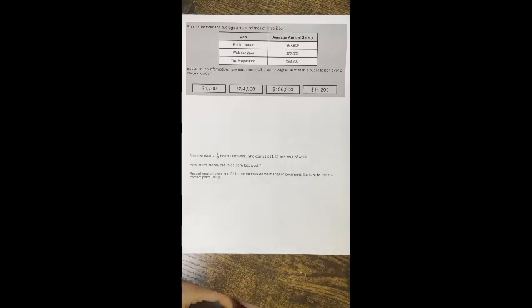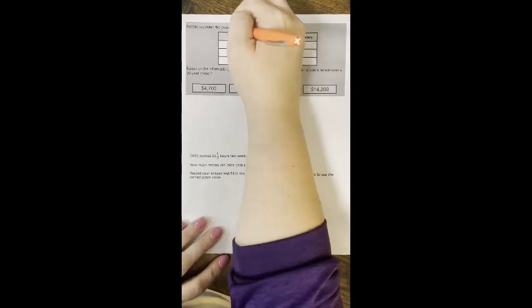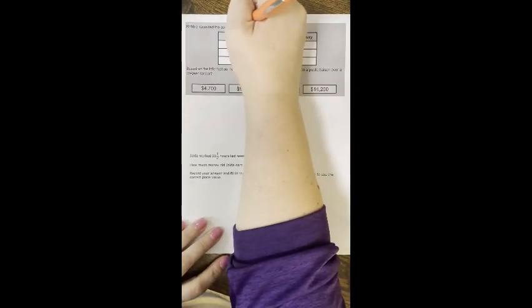Alright guys, we're going to go over this problem. I've seen several people on the homeworks struggling with it. We're going to pick out the key information together. It says Robbie recorded the average annual salaries of three jobs. The first keyword that I see is annual, and we learned that annual means one year.